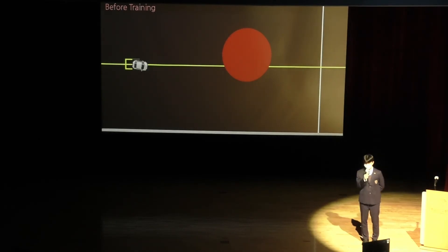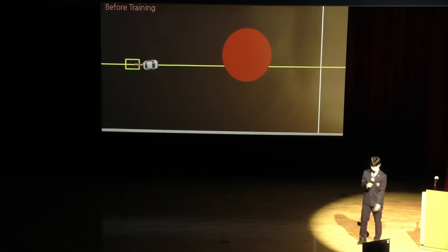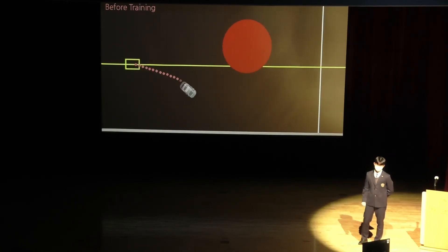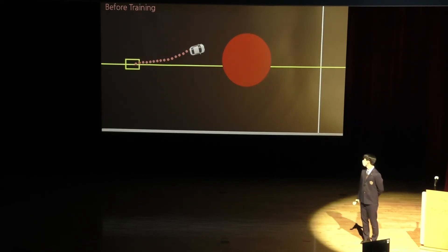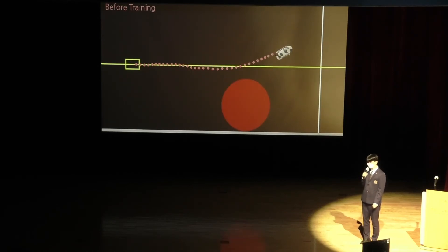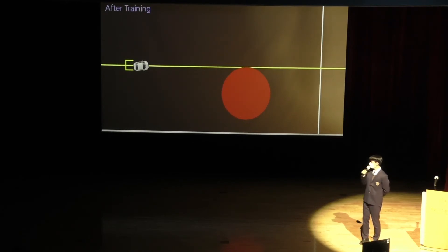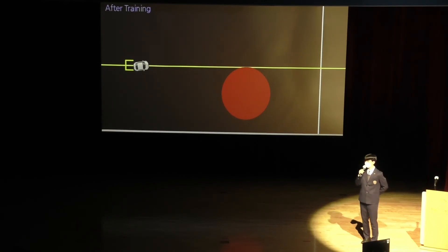In the first video, it shows how the agent moves before training — it has not learned anything yet, so it cannot drive very well. In the second video, it shows how the agent moves after training — and here comes the magic trick.